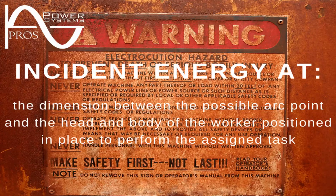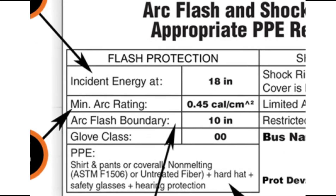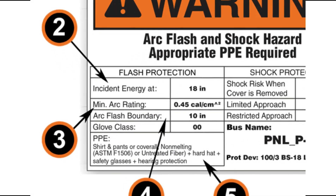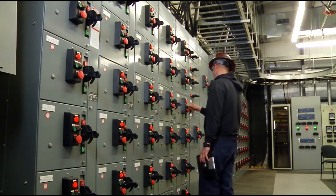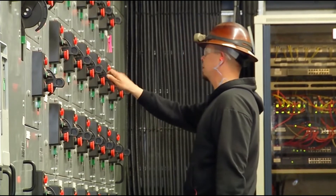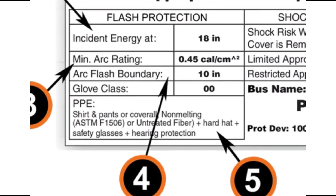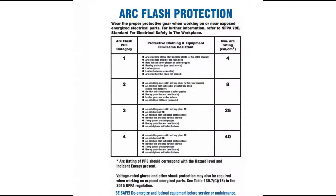Number two: incident energy at the corresponding working distance. The IEEE defines working distance as the dimension between the possible arc point and the head and body of the worker positioned to perform the assigned task. Number three: minimum arc rating is a measurement in calories per centimeter squared or joules per centimeter squared of thermal energy at a working distance from an arc fault. Number four: the arc flash boundary — the shortest distance at which a person may receive permanent injury, which is the onset of a second degree burn or worse, if not properly protected by arc-resistant or flame-resistant clothing or PPE. Each hazard risk category requires a different level of protection; categories range from one to four. Category zero was removed in the NFPA 70E 2015 edition.